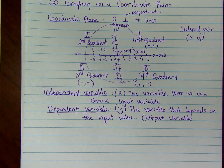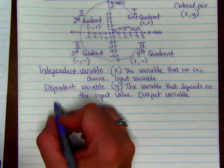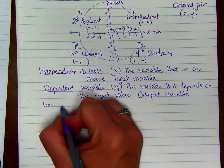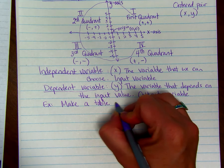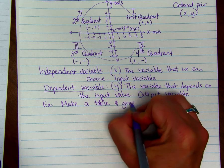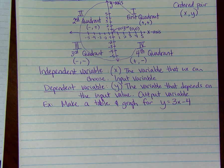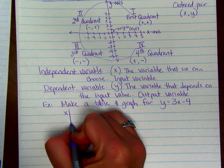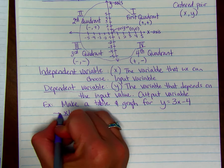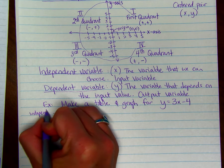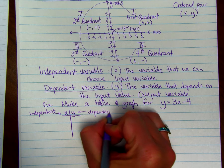So we're going to show you some examples of using the independent and dependent variable. Make a table and a graph for y equals 3x minus 4. When we make a table we always put the independent variable on the left and the dependent variable on the right. So our independent is x and it goes on the left, and our dependent is y and that goes on the right.